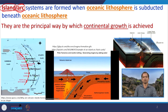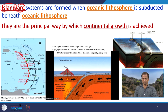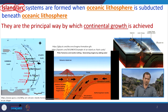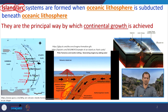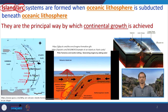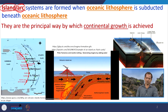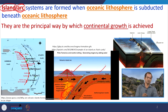Island arcs are formed when oceanic lithosphere subducts under another oceanic lithosphere. One oceanic plate goes down and, upon reaching the asthenosphere, sufficient temperature and pressure cause devolatilization and partial melting. The generated magma erupts, creating volcanoes that rise above the ocean floor to create islands. Both the subducting and overriding plates are oceanic lithosphere. Island arcs are the principal way by which continental growth is achieved.